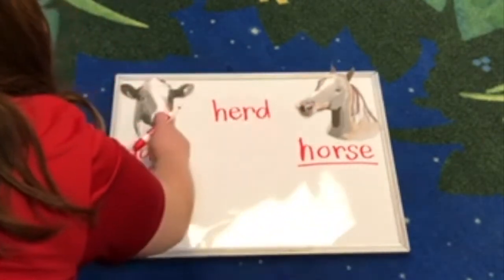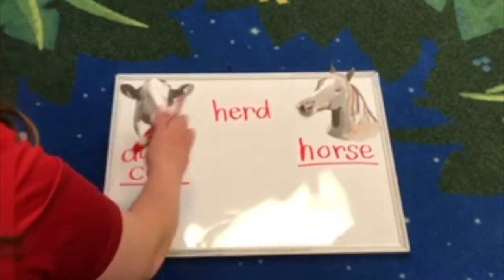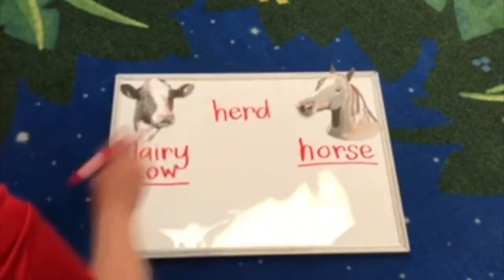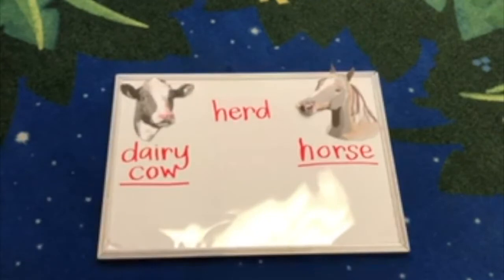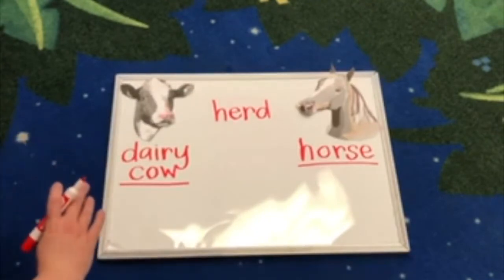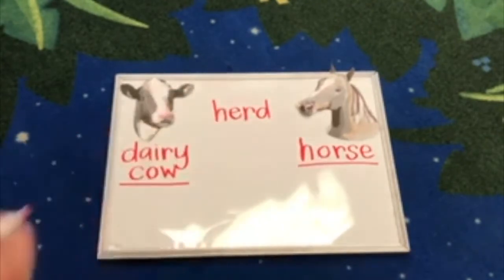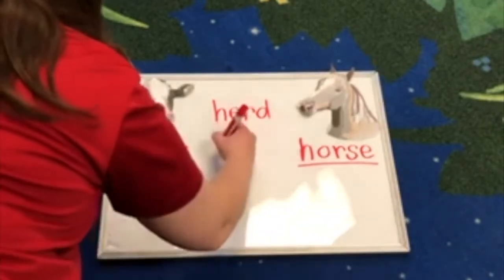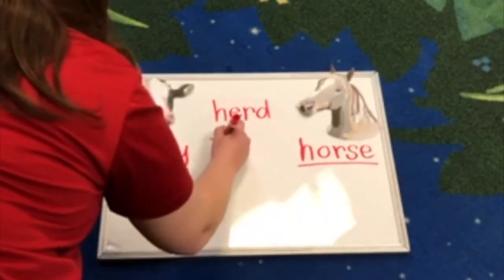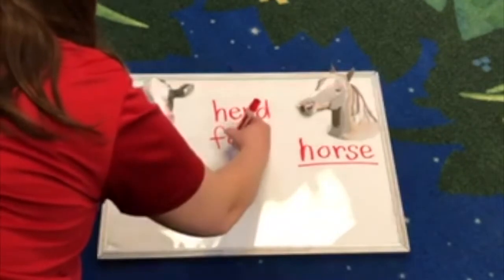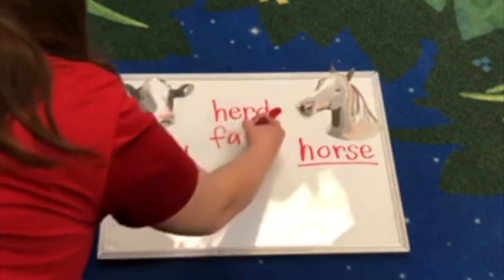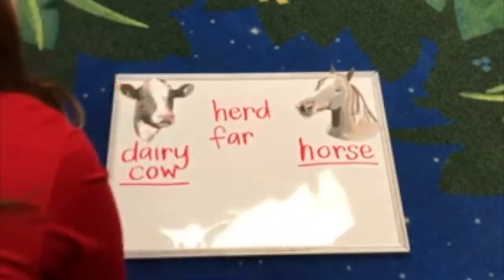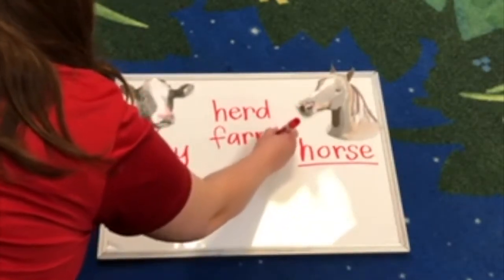Both dairy cows and horses love to live together in a herd with their own kind. What else do dairy cows and horses have in common? One place they both can live — that's right, on a farm! F-A-R-M — that's how we spell farm.